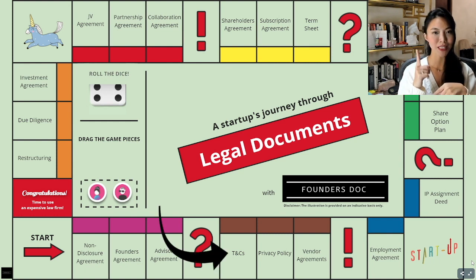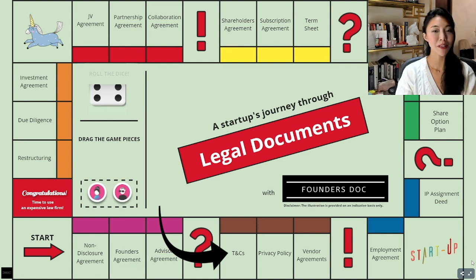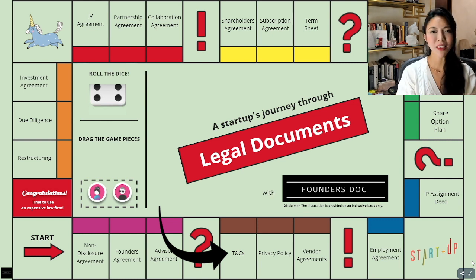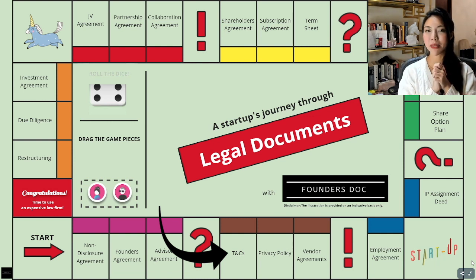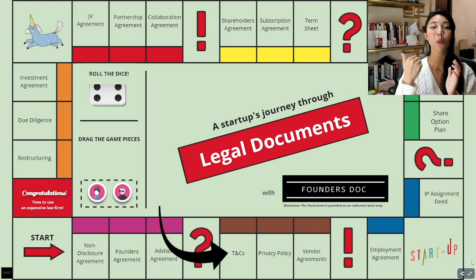Moving on to our first document, the terms and conditions. We know a lot of startups start off by copy and pasting terms and conditions from their competitors, but as your business grows and matures and your customer base grows, we like to make sure that the terms and conditions you're using is actually applicable to your business. Number one: limitation of liability. We like to make sure that the liability you have towards your consumers and end users is limited both in terms of quantum as well as the type of laws involved.